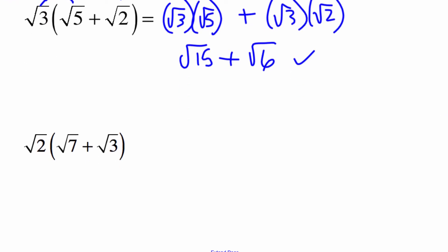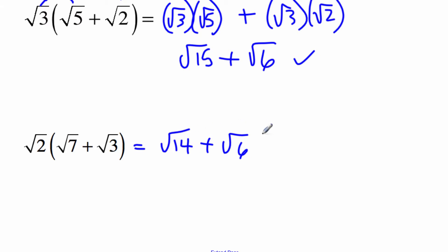Let's try this one — press pause. In the end you should be getting root 14 plus root 6. Notice I can't put the radical over all of them — this times this would just be root 14, this times this would be root 6, and I'm adding them.